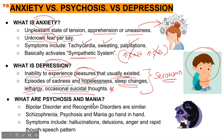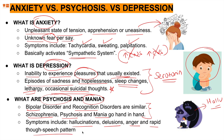Psychosis and mania represent a hyperactive state of the CNS — bipolar disorder, recognition disorders, schizophrenia, psychosis, and mania. Symptoms include hallucinations, delusions, anger, and rapid thought and speech patterns. Psychosis is the medical diagnosis for what laypersons call 'crazy.' Now moving to the GABA function and the molecular aspect of anxiety.